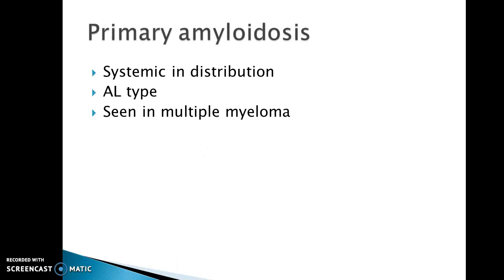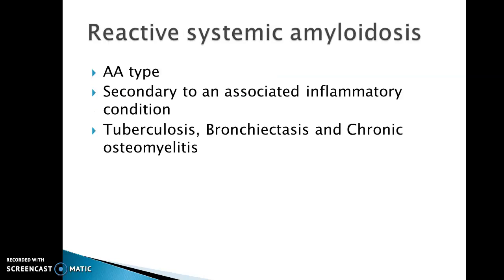Primary amyloidosis is systemic in distribution, AL in type, and seen in multiple myeloma. Reactive systemic amyloidosis is AA in type, secondary to an associated inflammatory condition such as tuberculosis, bronchiectasis, and chronic osteomyelitis.